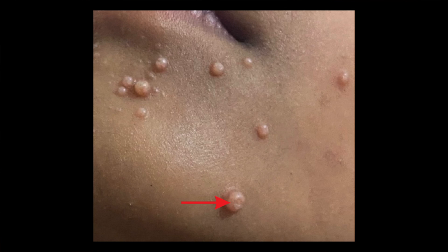The most striking feature is a central dimple, which I'm pointing out here. Sometimes areas of dry redness like eczema can appear around the spots. There may be only one or two spots, and usually fewer than 20, however they can be clustered together. The most common areas where spots appear are the face, chest, armpit, upper legs and genital area, however they can appear anywhere on the body.